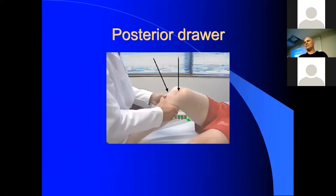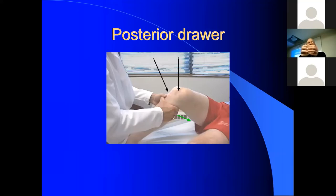After the anterior drawer, do a posterior drawer to test the PCL — essentially pushing the tibia the opposite direction. Have your IP joints on the tibia and pads of your thumbs on the femoral condyles. As you push posteriorly, your thumbs will straighten from a flexed position if there's significant posterior translation. Compare side to side — if the tibia shifts a lot posteriorly, be suspicious for a PCL tear.